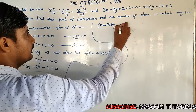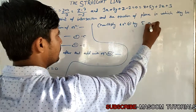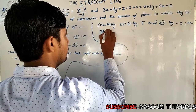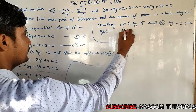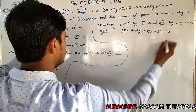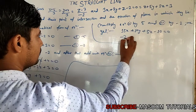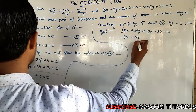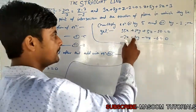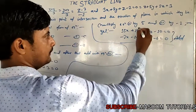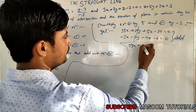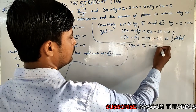Multiply equation 1 by 5 and equation 2 by minus 2. We get 15x plus 10y plus 5z minus 10 equal to 0, and minus 2x minus 10y minus 4z minus 6 equal to 0. Adding both equations, y cancels. We get 13x plus z minus 16 equal to 0.